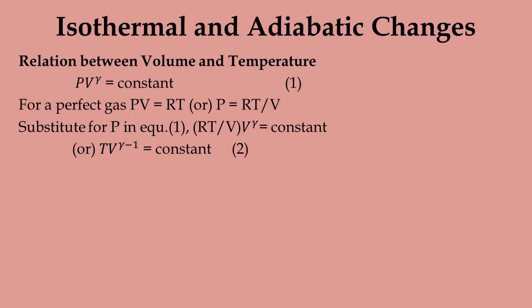We can also derive the relation between volume and temperature. Again, starting from PV^γ = constant, and using PV = RT so that P = RT/V, substituting into the adiabatic equation gives TV^(γ−1) = constant.